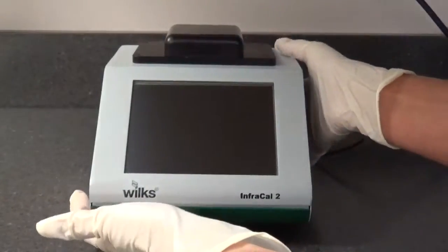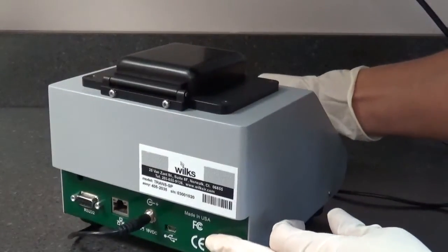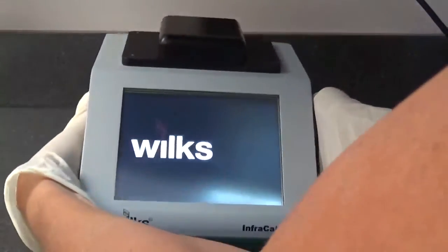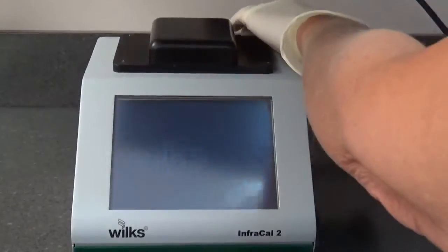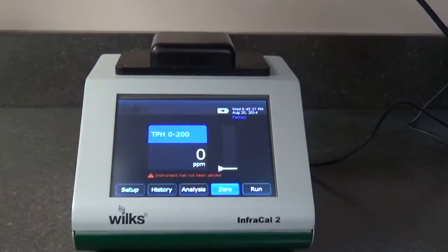The InfraCal 2 analyzer is designed for on-site measurements and is relatively insensitive to vibration and ambient temperature changes. It is recommended that the instrument be allowed to warm up for one hour prior to use. The InfraCal 2 analyzer draws very little power and if used daily, it can be left on at all times unless operated from the internal battery pack.